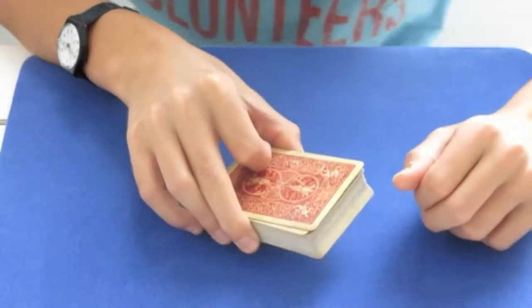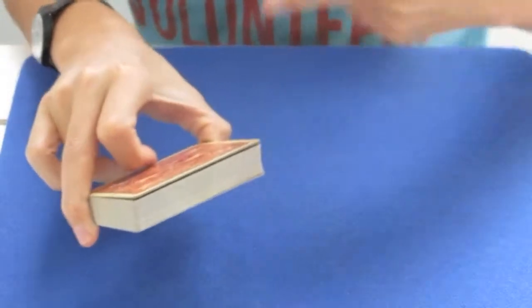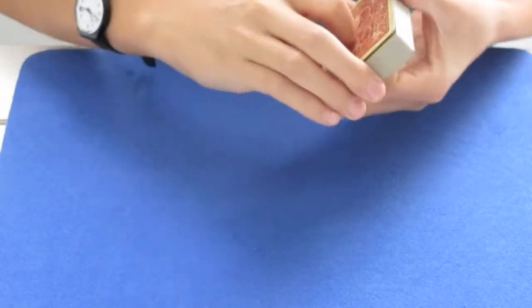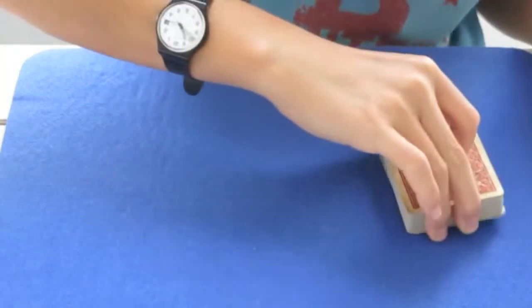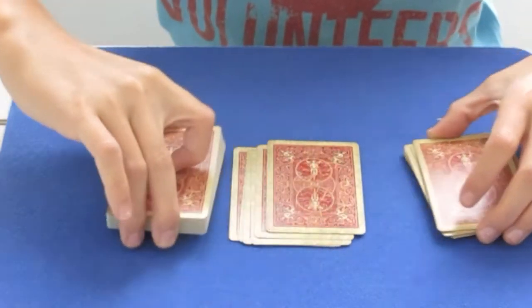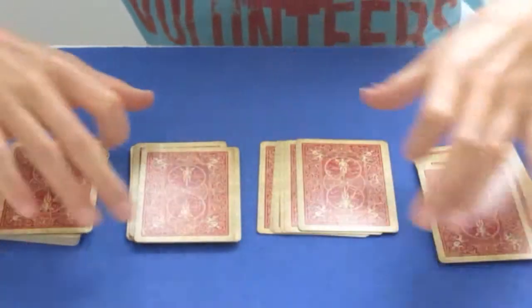First I'm going to ask my spectator to cut my normal pack of cards into 4 equal parts. So as I don't have a spectator, I'll do it myself. 1, 2, 3, and 4.